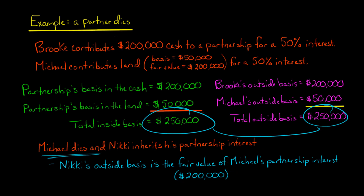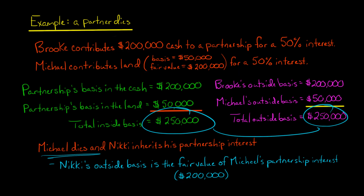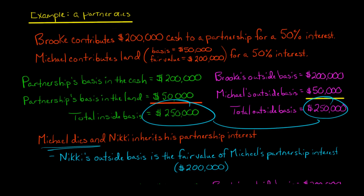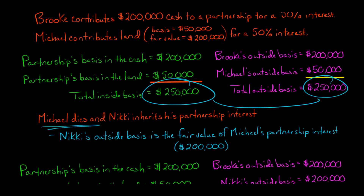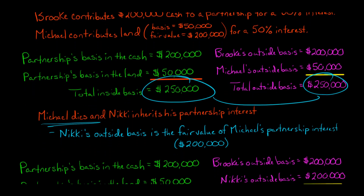So what is the fair value of it? Well, this partnership has $200,000 of cash, and then they have land with a fair value of $400,000. Michael had a claim of 50% on that. So Nicky is getting a partnership interest that is 50% of a partnership with $400,000 of fair value of its assets — basically a partnership interest worth $200,000.